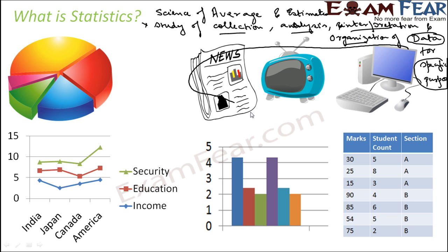This data is generally provided by television, magazines, radios, and the internet — these are the typical sources of data. We also get data of marks obtained by different students in different classes in school — for example, how many marks in physics, chemistry, maths, and so on. All this data is huge.